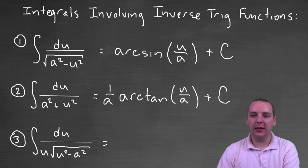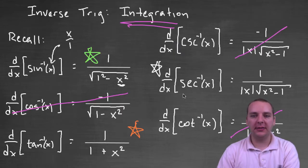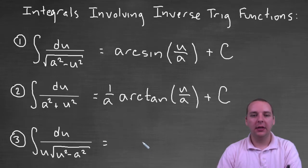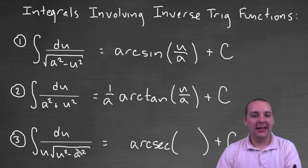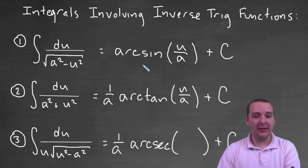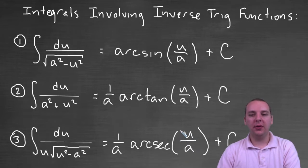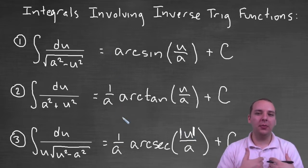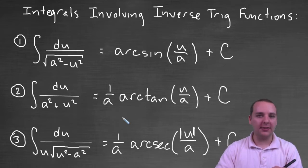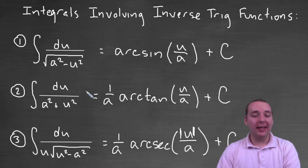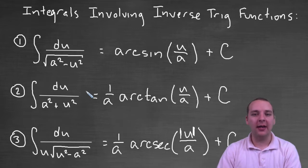The last template fits arc secant by process of elimination. Its integral is one over a times arc secant of the absolute value of u over a, plus C. Note that arc sine is the only one without a one over a out front — both arc tangent and arc secant have that one over a coefficient, and arc secant uses the absolute value of u over a. I'd recommend making flash cards for these three and memorizing them. Three is much better than six.